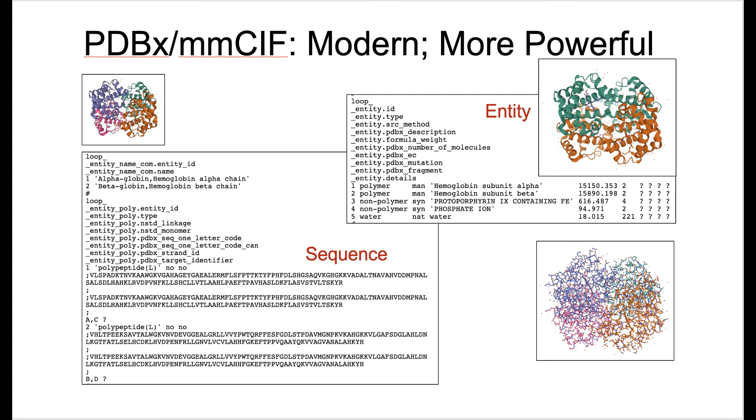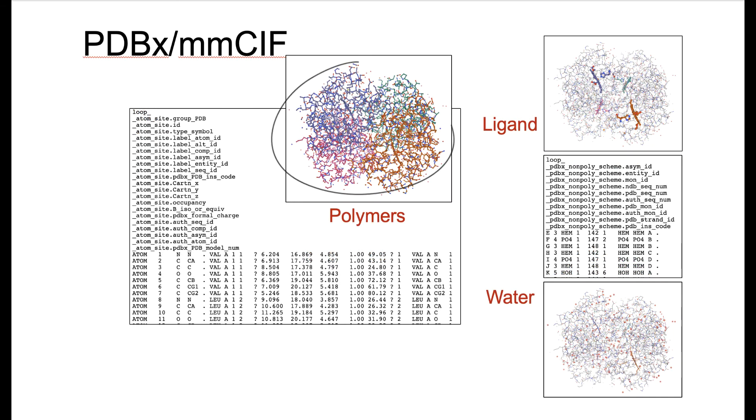In detail, you can now get information about every single entity: hemoglobin alpha and beta chains, the heme, phosphate, water, etc., the sequences of every single polymer chain, and all the coordinates of the polymer, the proteins, the ligands, waters. Everything is included in explicit detail in this file.